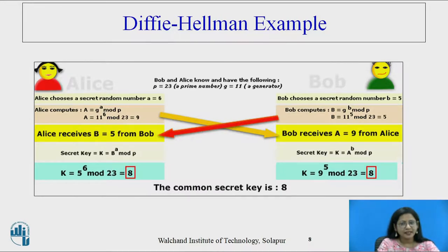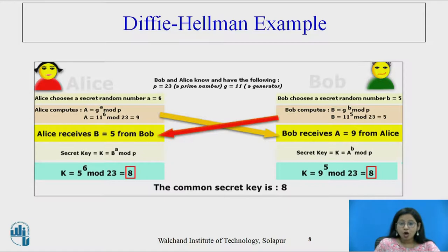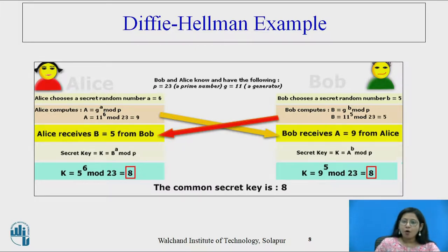Alice receives Bob's public key and Bob receives Alice's public key. Now it is time to calculate the secret key: K = B raised to A mod P at Alice's side, and K = A raised to B mod P at Bob's side. The same key exists at both sides — the common secret key is 8. With the help of only mathematical functions, Bob and Alice are both able to find out the session key for that particular session.